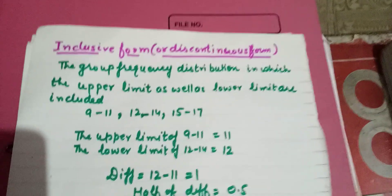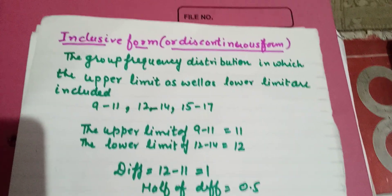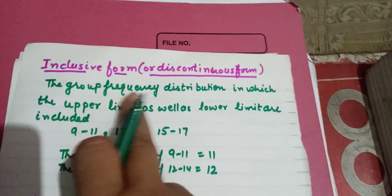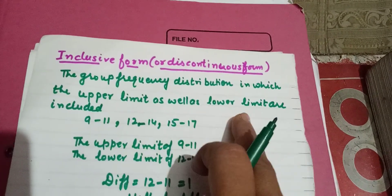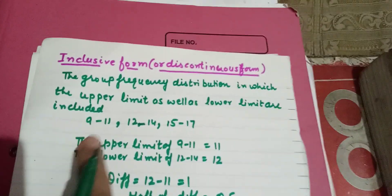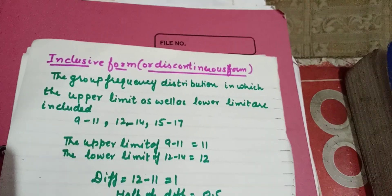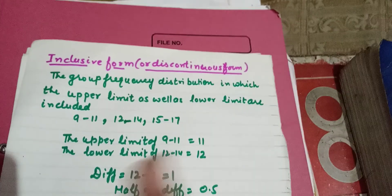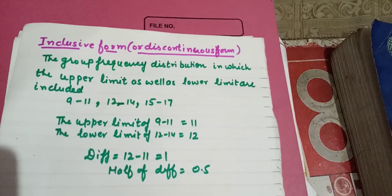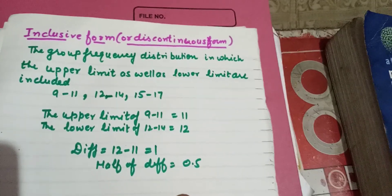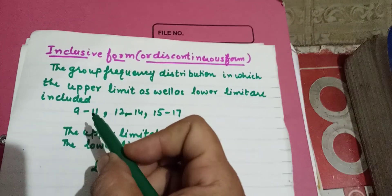The second type is the inclusive form, also called the discontinuous form. This is the grouped frequency distribution in which both the upper limit and the lower limit are included. For example, 9 to 11. In the exclusive form we took 0 to 5 then 5 to 10 — the 5 was used as a lower limit of the next class. But here we include both 9 and 11.